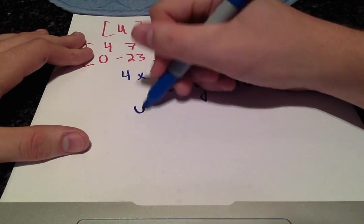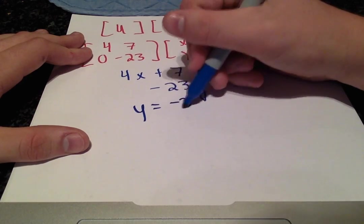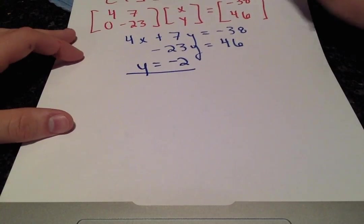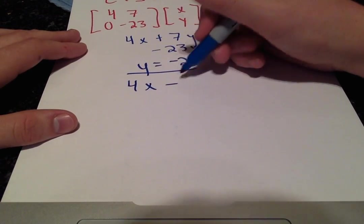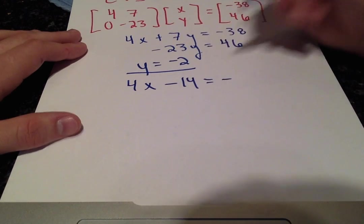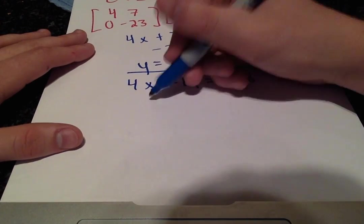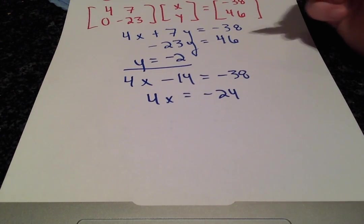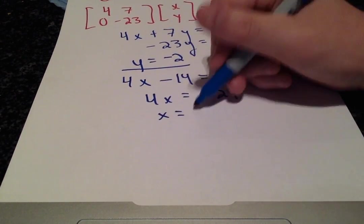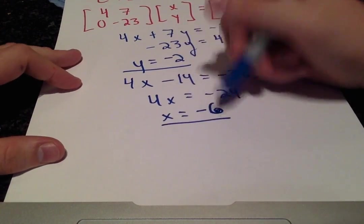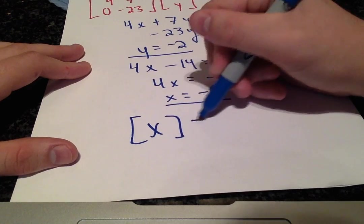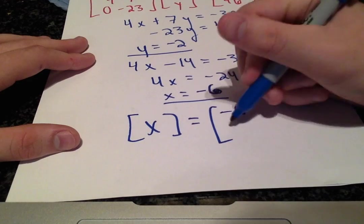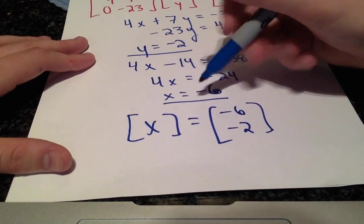Y, we get it right away. It's just negative 2. Plugging that back into the other equation, we get 4X minus 14 is equal to negative 38, or 4X is equal to negative 24, allowing us to solve for X as negative 6. Giving us our solution vector, which is the combined terms X and Y, negative 6, negative 2.